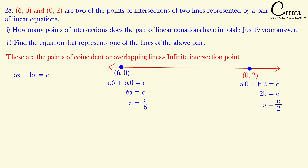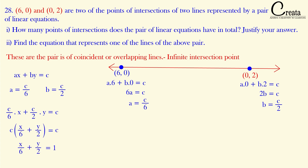We now have the values of a and b in terms of c. Substituting into the general equation and taking c as common, we get x/6 + y/2 = 1. Taking LCM as 6, we get (x + 3y)/6 = 1, which gives us the equation of the line as x + 3y = 6. This is the answer to the second part.